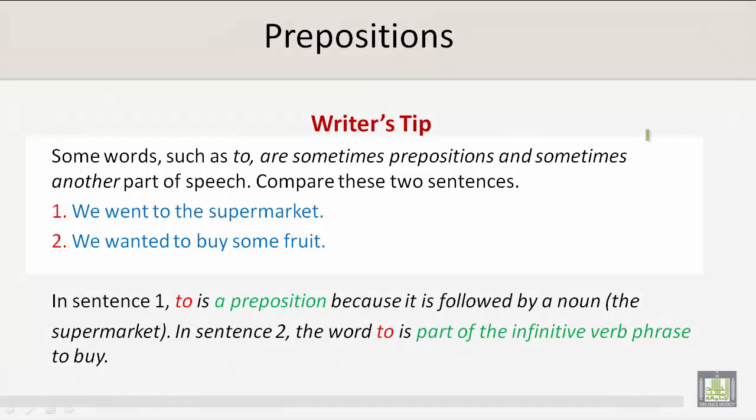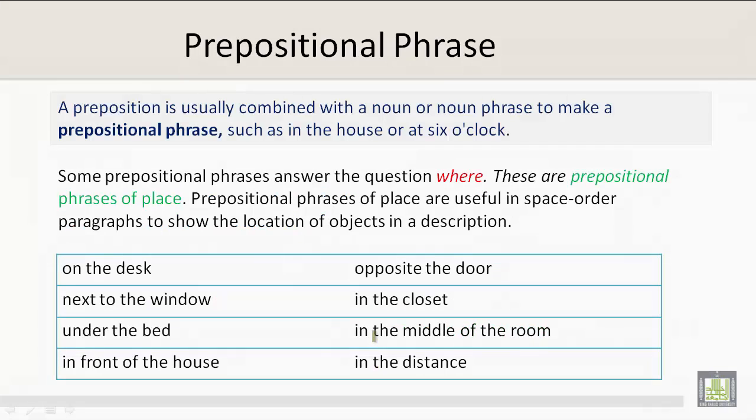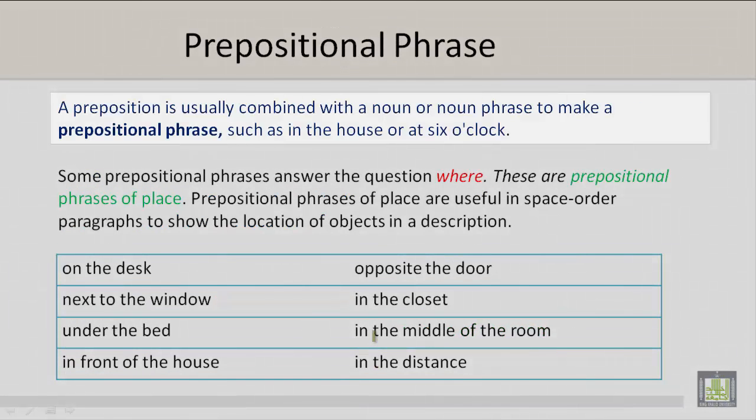Prepositions Writer's Tips. Some words such as to are sometimes prepositions and sometimes another part of speech. Compare these two sentences: We went to the supermarket. We wanted to buy some fruit. In sentence one, to is a preposition because it is followed by a noun, the supermarket. In sentence two, the word to is part of the infinitive verb phrase to buy. A preposition is usually combined with a noun